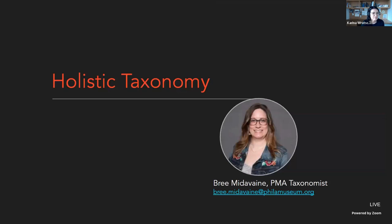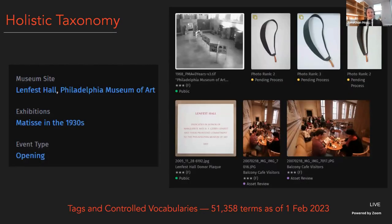Undergirding all of this work is an institution-wide holistic taxonomy. We interviewed staff across the organization and worked with our metadata and governance group to build it out. Our taxonomist Brie Minivane helped organize, structure, and consolidate the findings as part of our Art Information Commons project to develop a unified, cohesive taxonomy — both for keyword tagging and for use in controlled vocabularies in the DAM and beyond. These terms link assets and concepts together across asset types and across systems. In this example, you can see objects located in one location called Lenfest Hall, as well as signage, past exhibitions, and marketing collateral, all linked together by a site term.